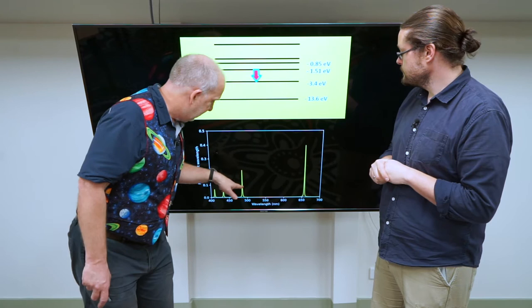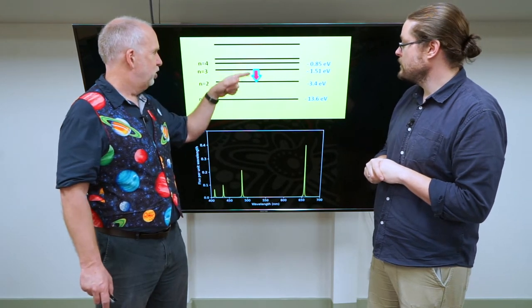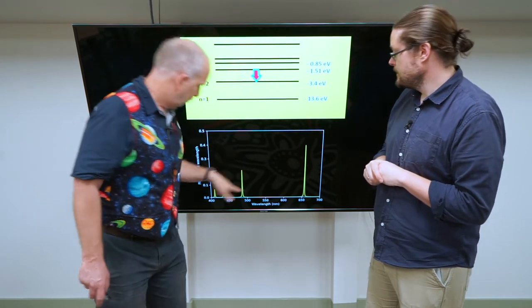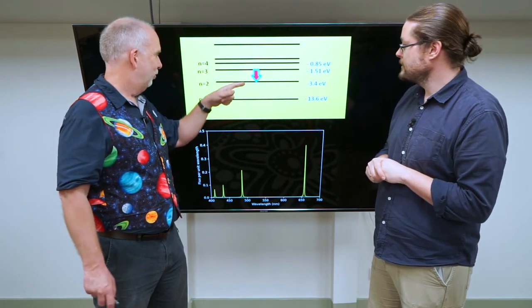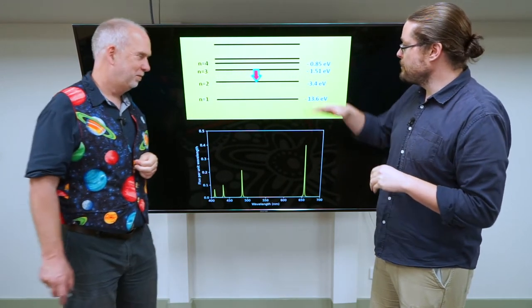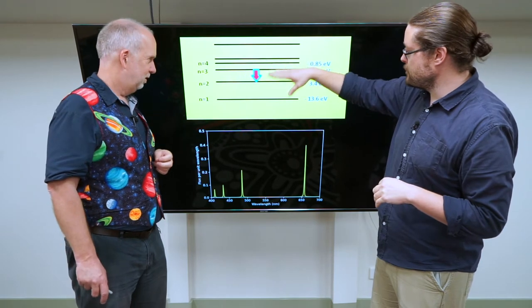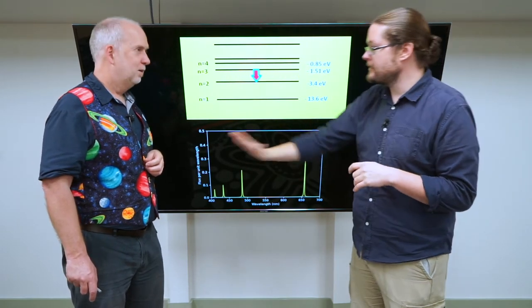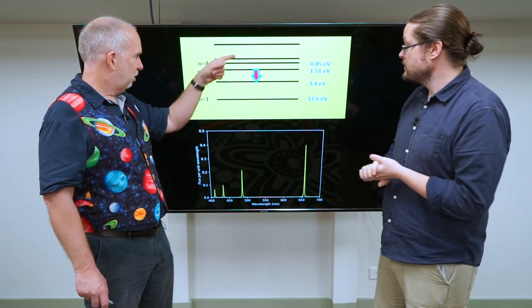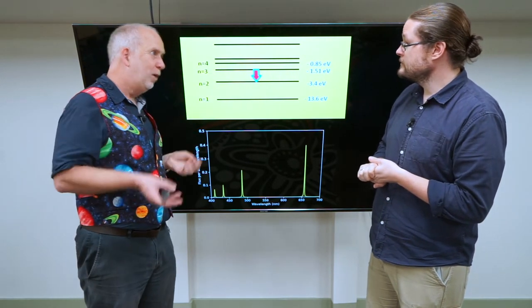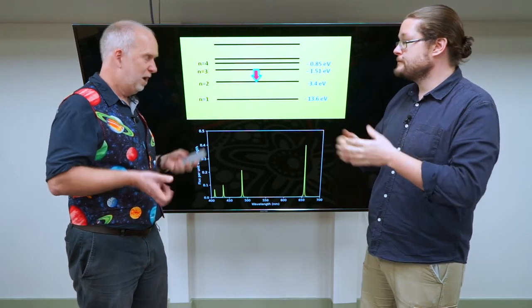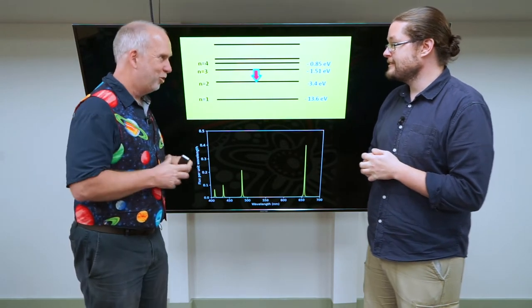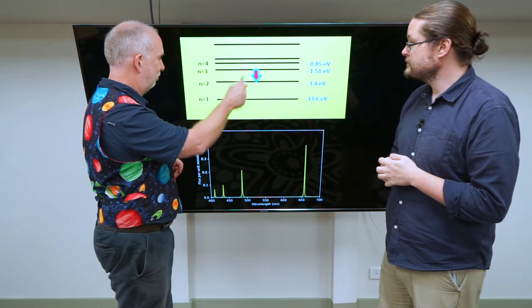The spike here is due to it jumping from the fourth energy level all the way down to the second energy level. This one here is from the fifth energy level down to the second energy level. So because the transitions or the amount of energy it's spinning is different, the wavelengths that it's emitting is different.